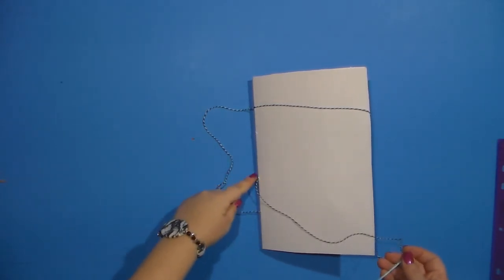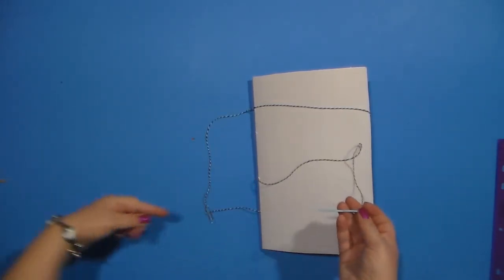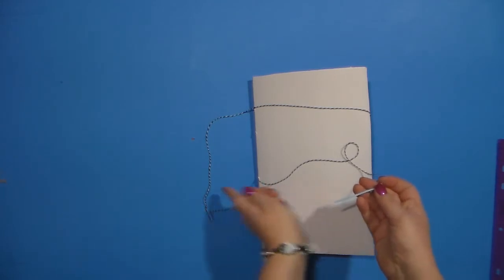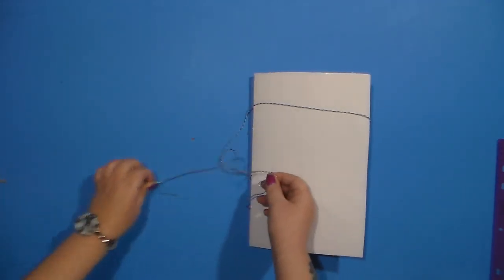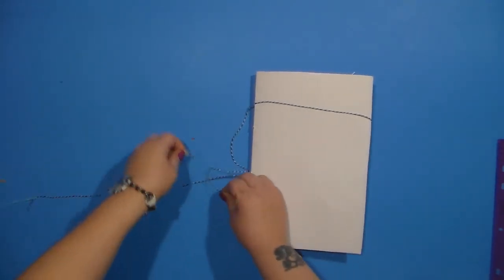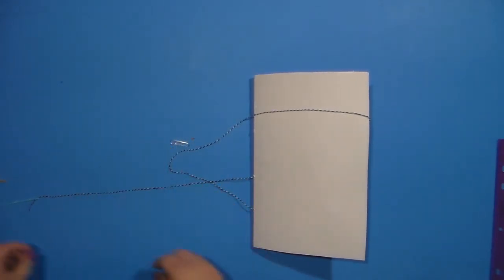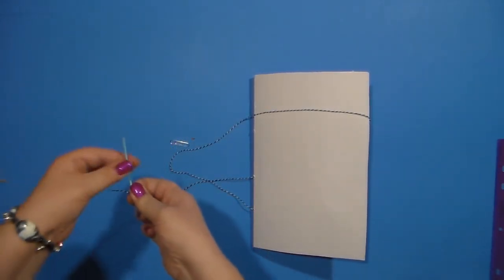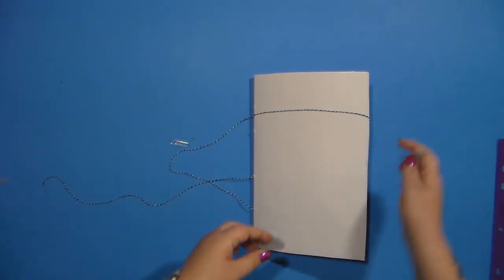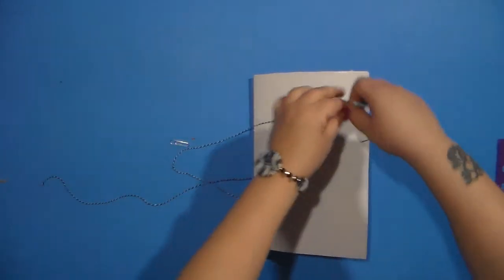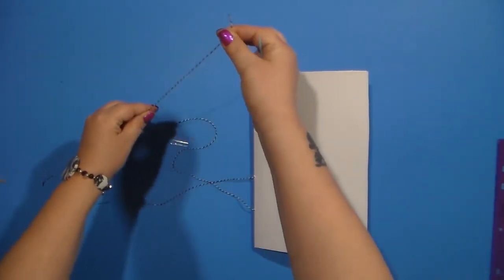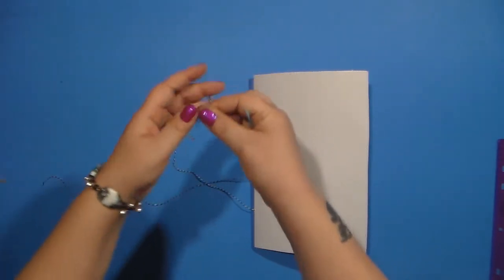So here is the center of my book. I've gone in this side and out this side. And again here is the center of my string. So I'm going to take the needle totally off and I'm going to put it on the opposite side now. Remember keep the paper clip in the middle.